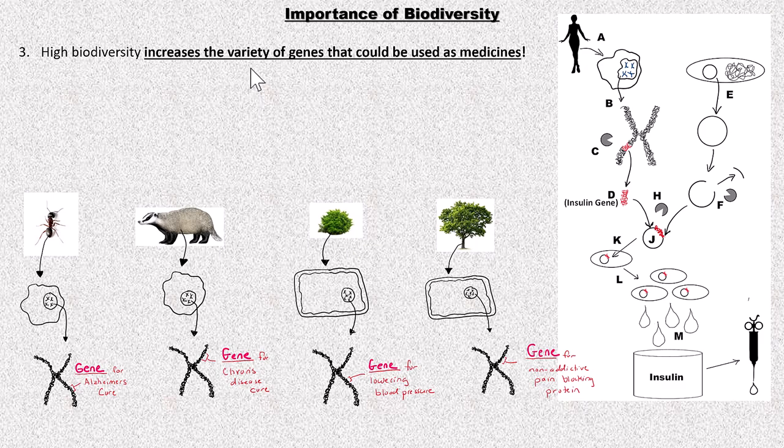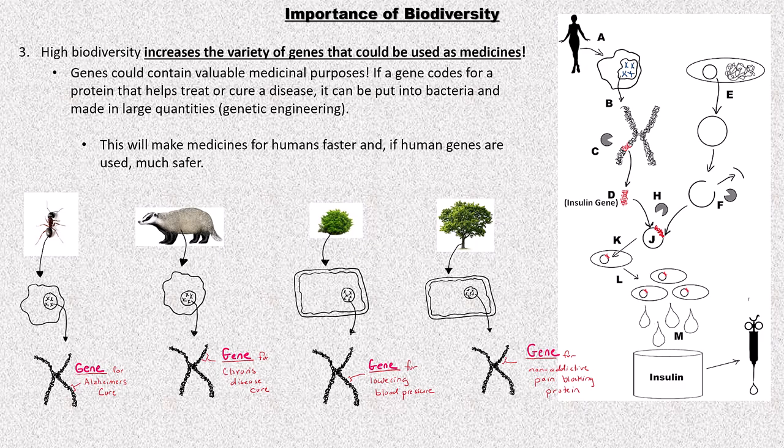Three: a lot of biodiversity increases the variety of genes that could be used as medicine. There might be genes in some organisms with great medicinal uses. Most medicines today do come from nature, though they're tweaked in the lab so a pharma company can put a patent on them. For example, ants might have a gene for an Alzheimer's cure; the anteater has a gene for a Crohn's disease cure; a shrub has a gene for lowering blood pressure naturally; and the tree has a non-addictive gene for pain blocking.